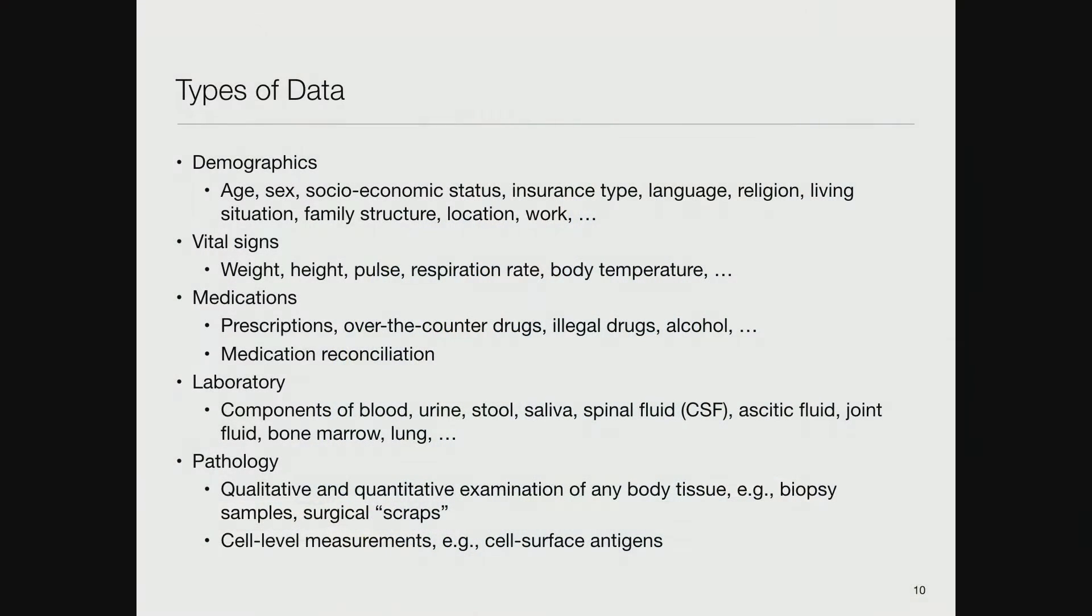Here's a catalog of types of data available to us from typical electronic health records. Demographics: age, sex, socioeconomic status, insurance type, language, religion, living situation, family structure, location, work, et cetera.